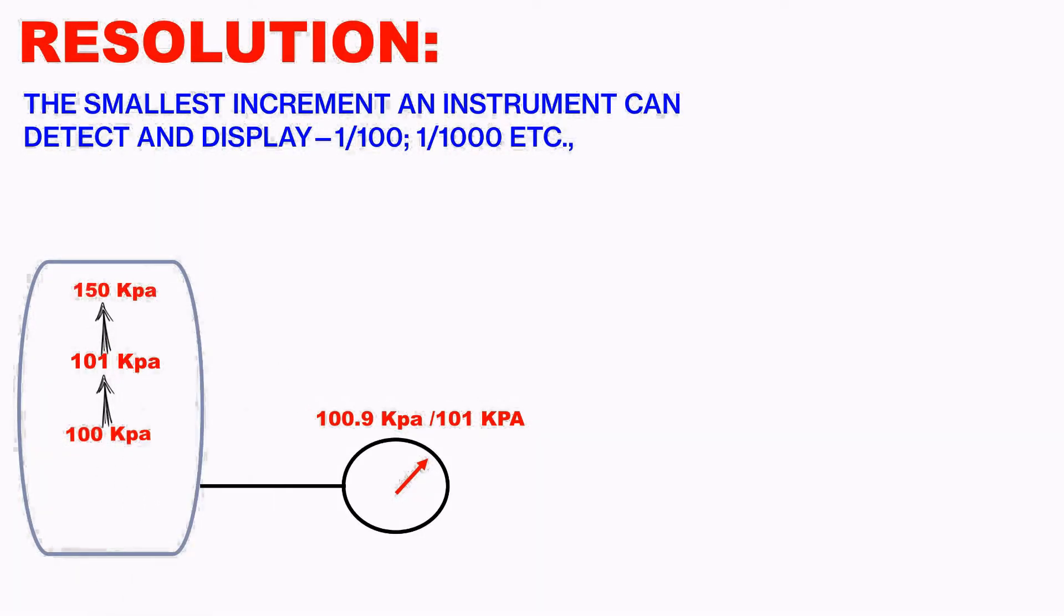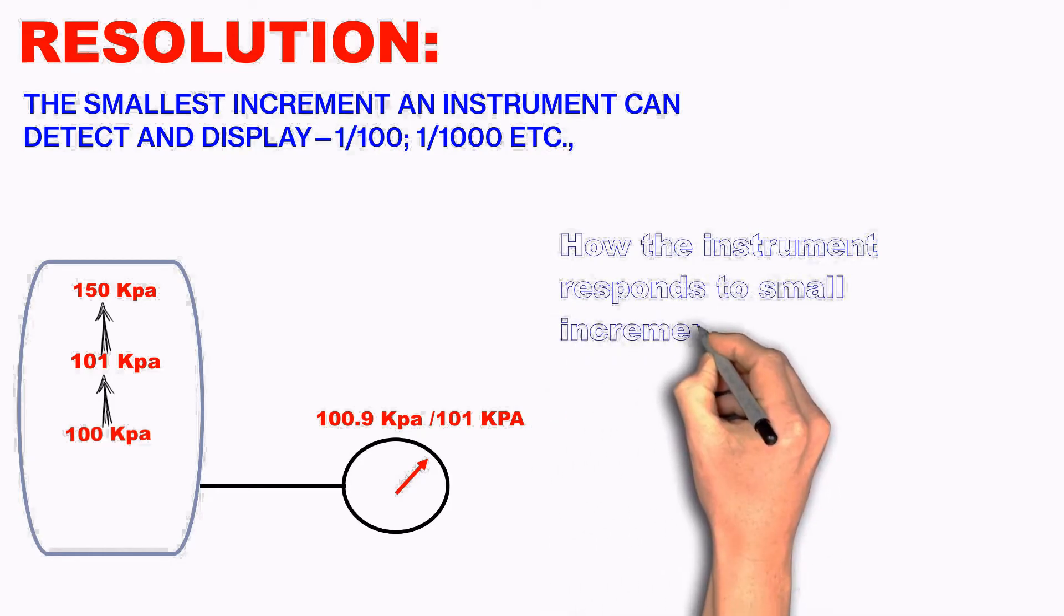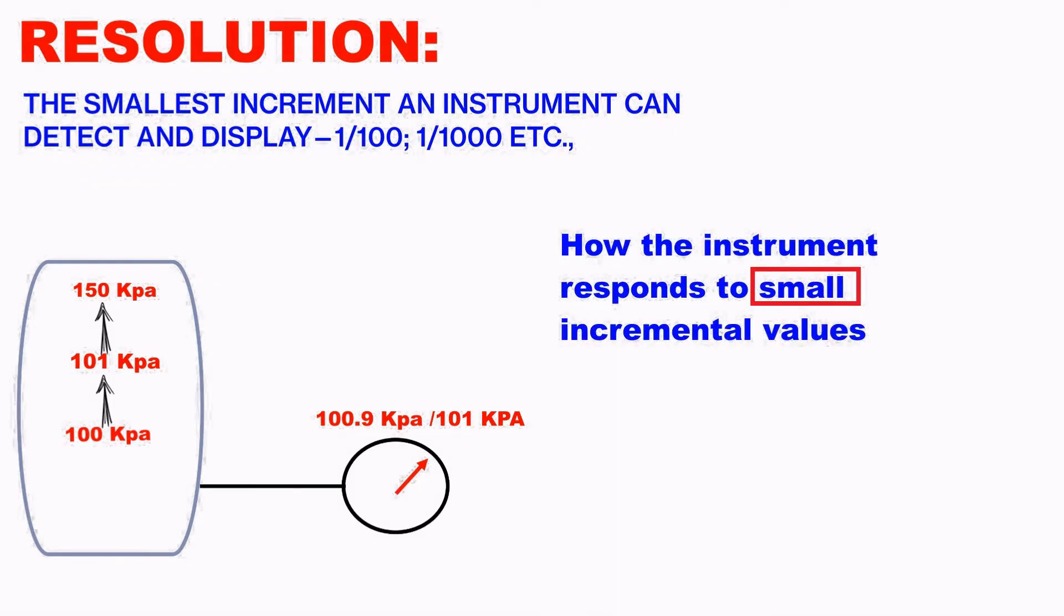For example, if the pressure of the vessel increases from 100 to 150 kPa, it immediately measures. If it increases to 110 kPa again, it immediately measures. But the question is, what is the resolution of the instrument? If the pressure increases from 100 to 100.5 kPa, so this is called the resolution.